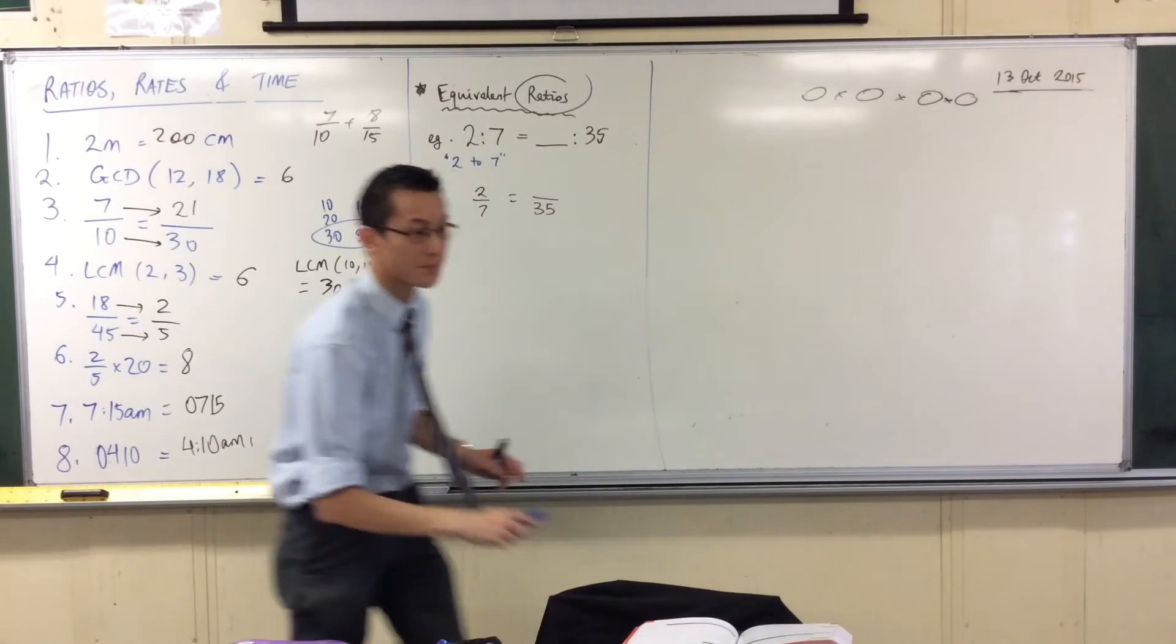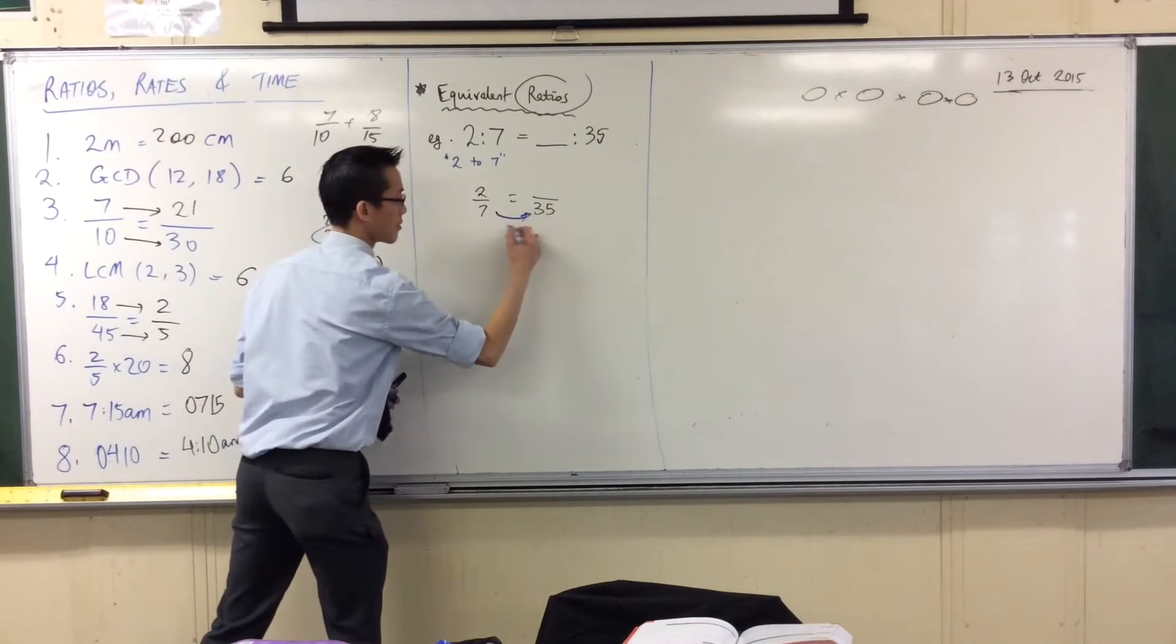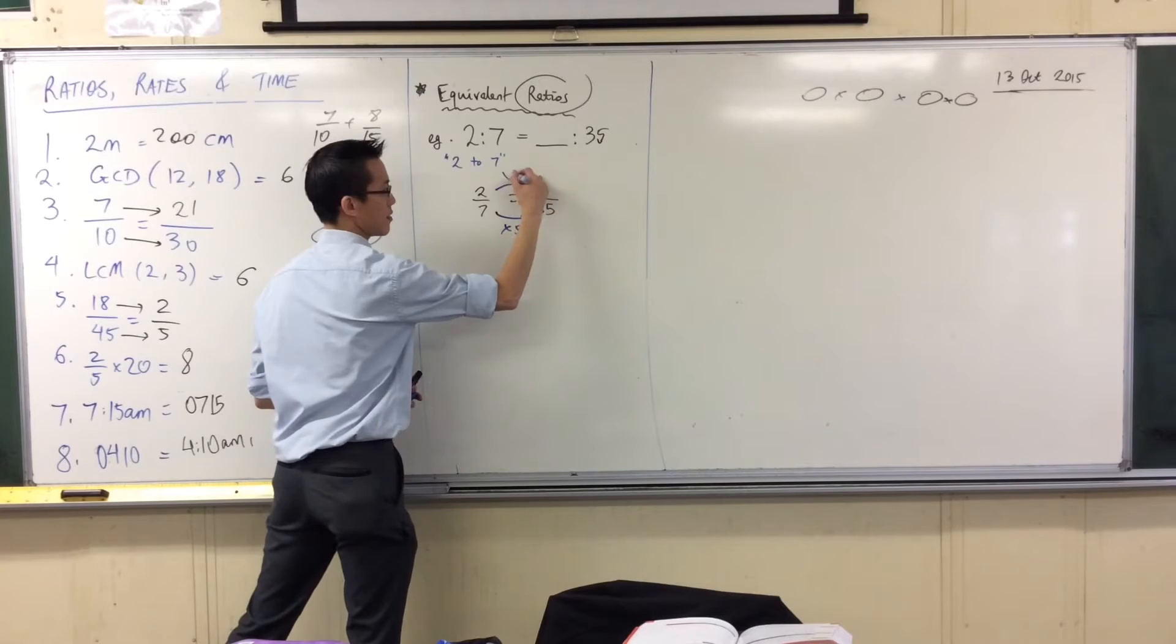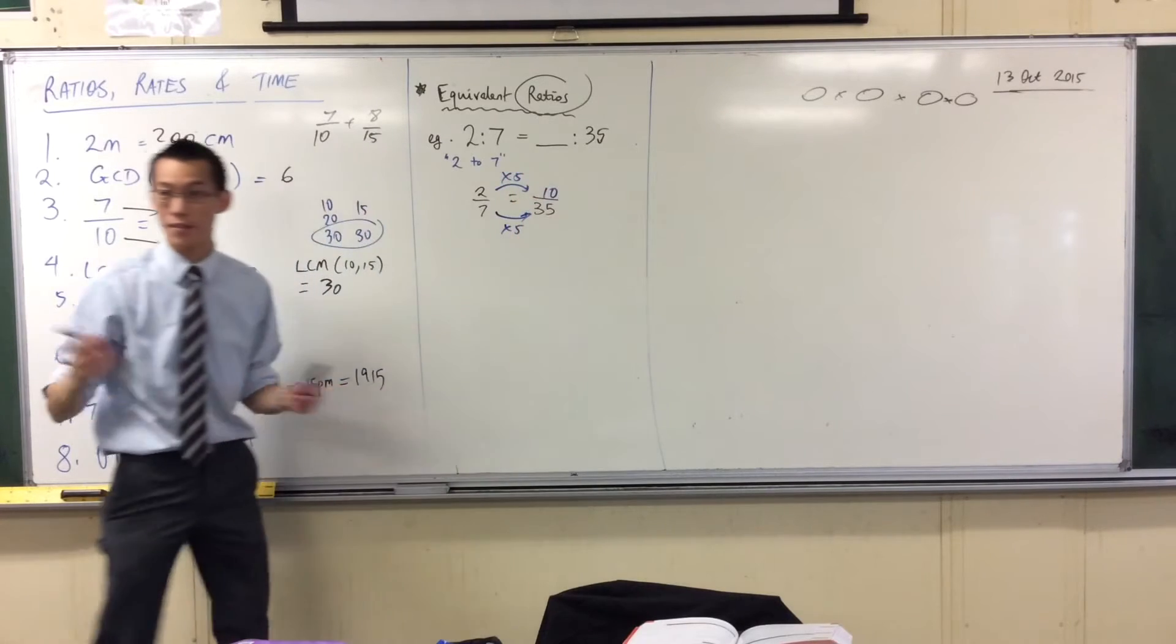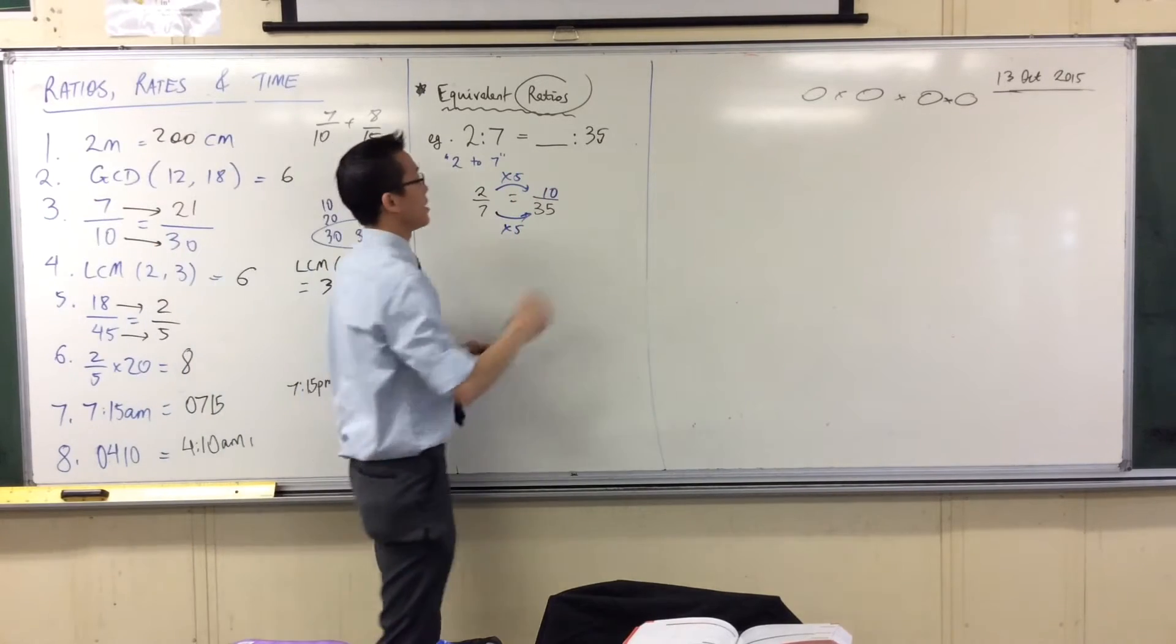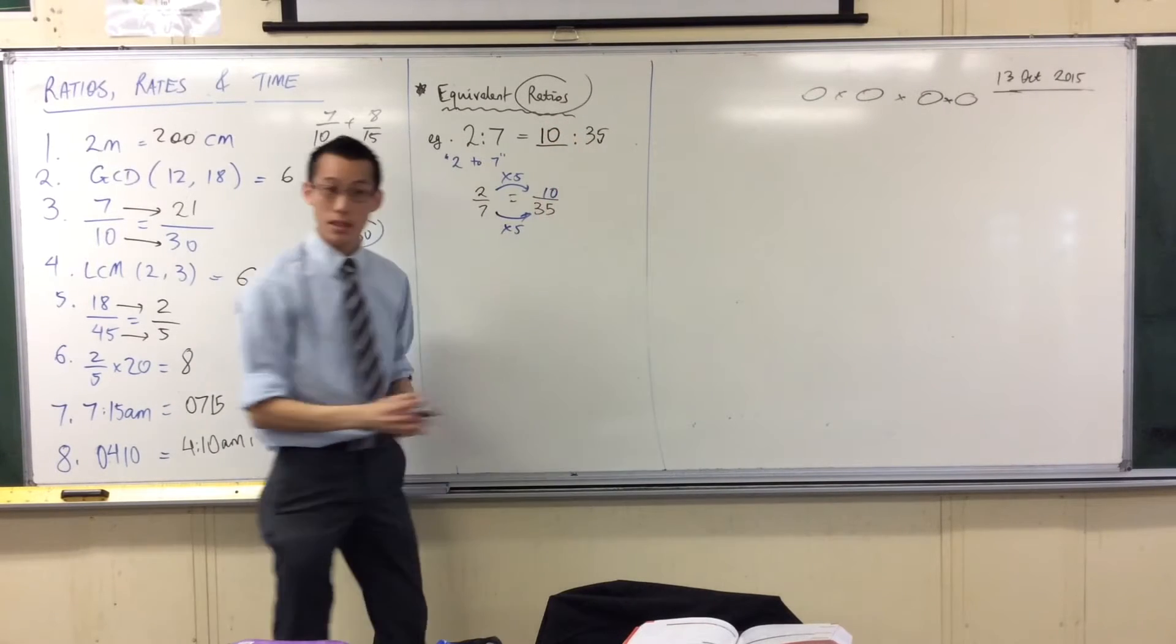What do we do to get to this unknown? Yeah, because 7 to 35 that's times 5 so then you times the 2 by 5. Perfect. 10 to 35. That's it. So our ratio, our new one, is 10 to 35.